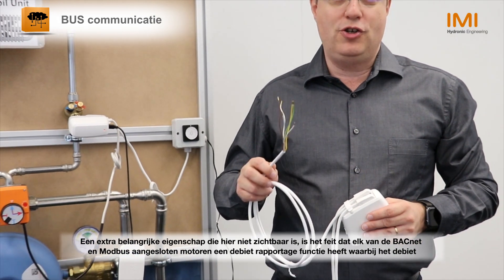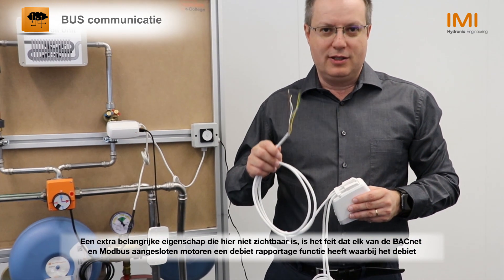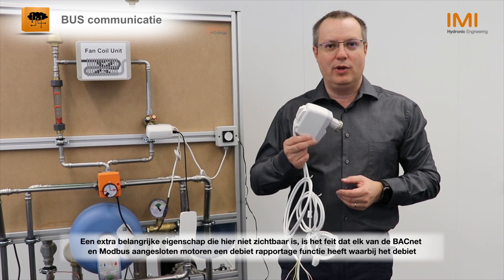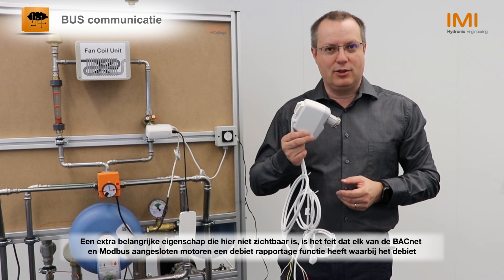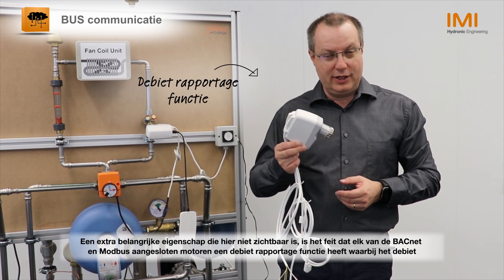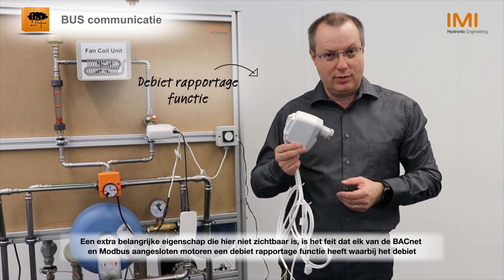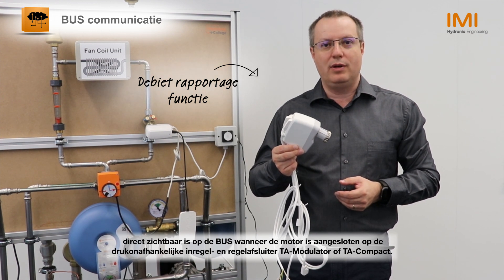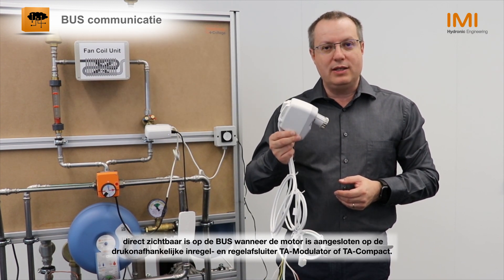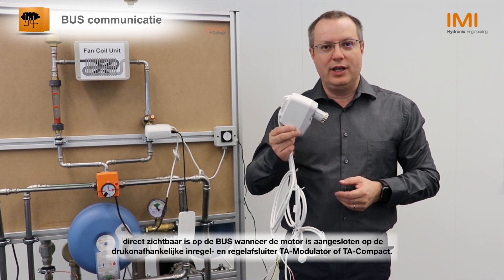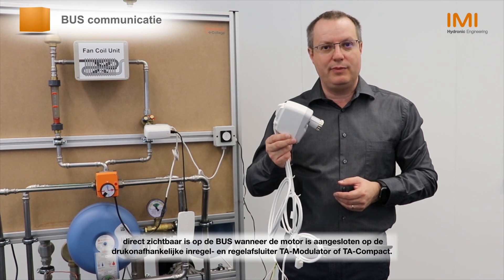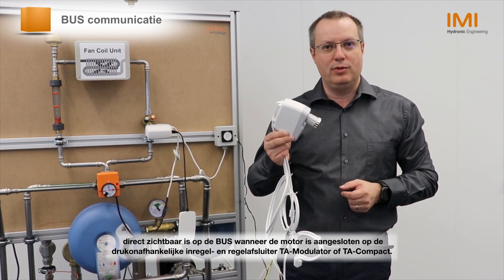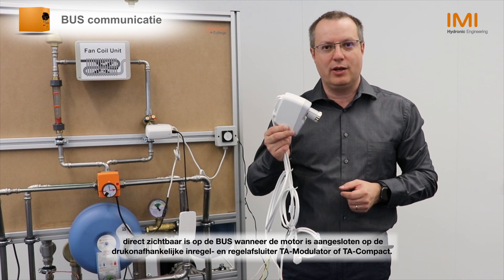One additional key feature that is not visible here is the fact that each of the BACnet and Modbus connected actuators has a flow reporting function, whereby the flow is directly visible on the bus line when the actuator is connected on a pressure independent balancing and control valve, such as TA modulator or TA compact.